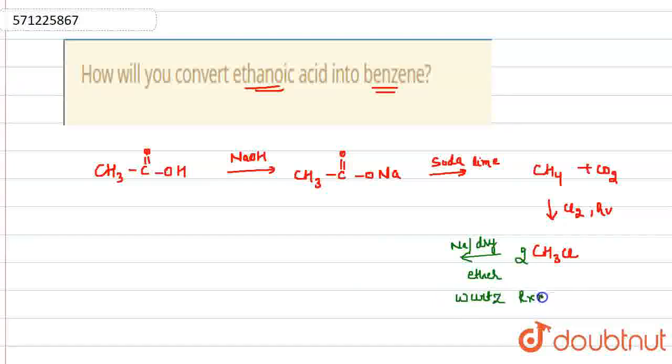Wurtz reaction occurs in which two sodium reacts with chlorine to form two NaCl and these CH3 groups combine with each other for the formation of ethane molecules.